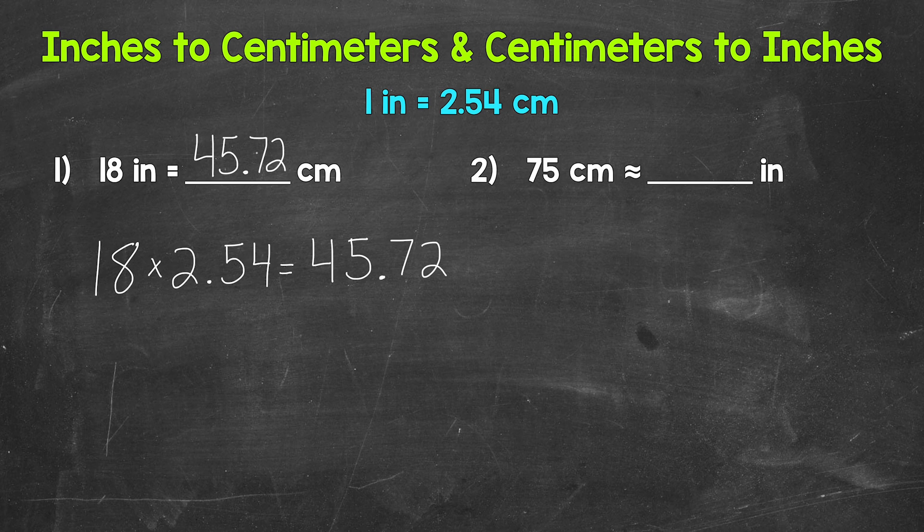Let's move on to number 2, where we have 75 centimeters is approximately how many inches? And we have approximately there because we are going to round. So we're converting centimeters to inches here. Well, each group of 2.54 centimeters equals an inch. So how many groups of 2.54 centimeters in 75 centimeters? We need to do 75 divided by 2.54.